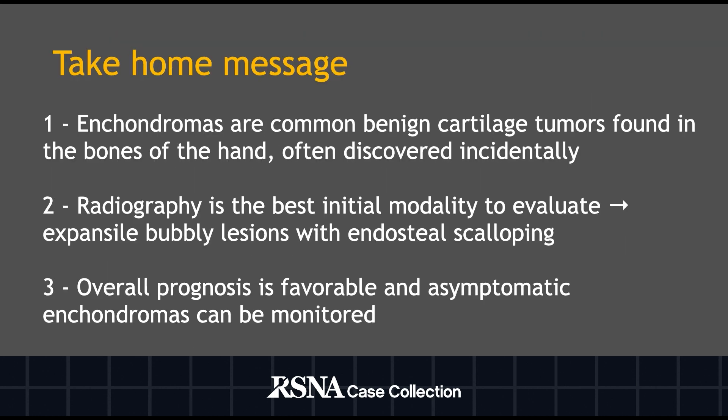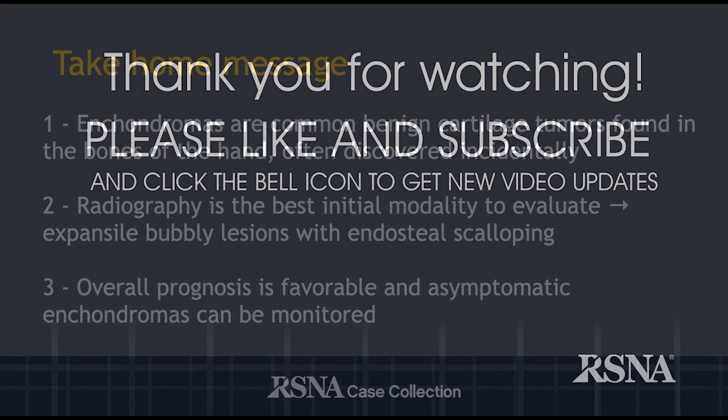In summary, enchondromas are common benign cartilage tumors found in the bones of the hand and are often discovered incidentally. Radiography is the best initial modality to evaluate and will elucidate expansile bubbly lesions with endosteal scalloping. Overall, the prognosis is favorable and asymptomatic enchondromas can be monitored, while surgery is generally reserved for symptomatic tumors. We hope you enjoyed our case and thank you for your time.